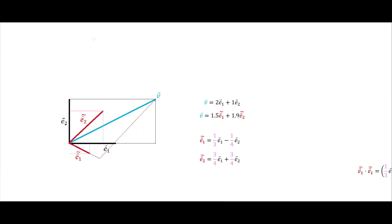After the previous video looking at the metric tensor primarily in orthonormal bases, I thought it might be illuminating to look at an example of a metric tensor in non-orthonormal bases. Here in black is the orthonormal basis, and then in red the tilde ones — a non-orthonormal basis — and this vector v expressed in terms of both bases.